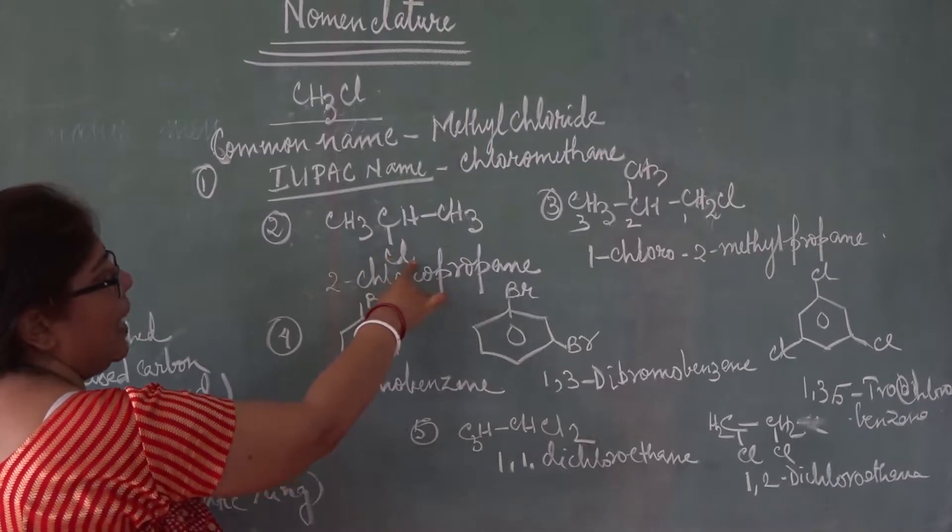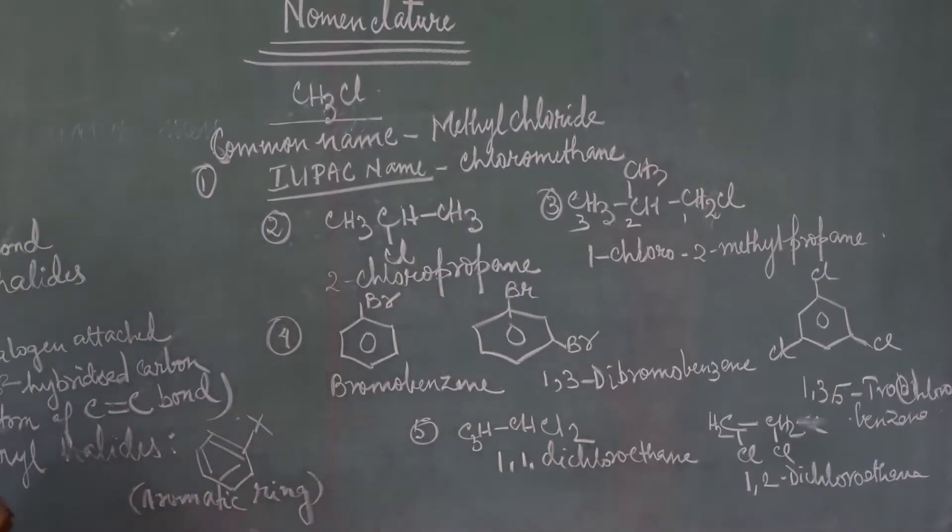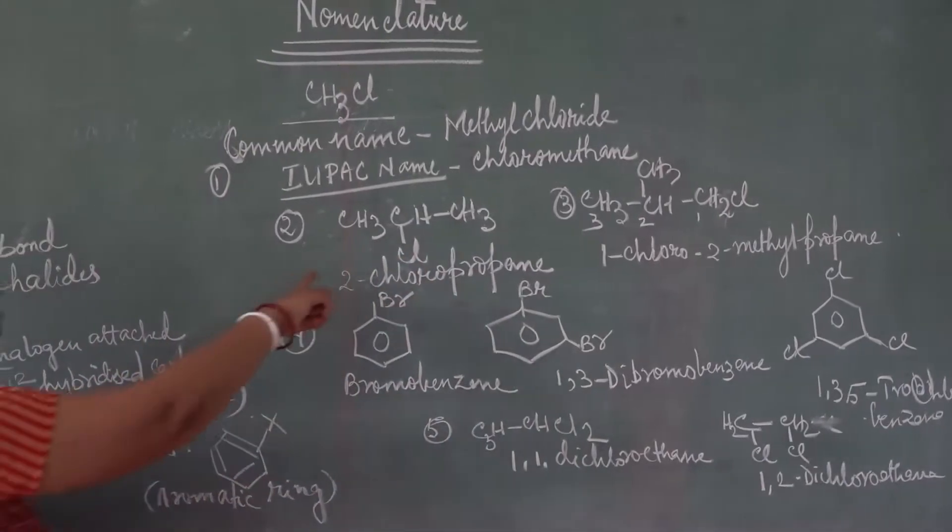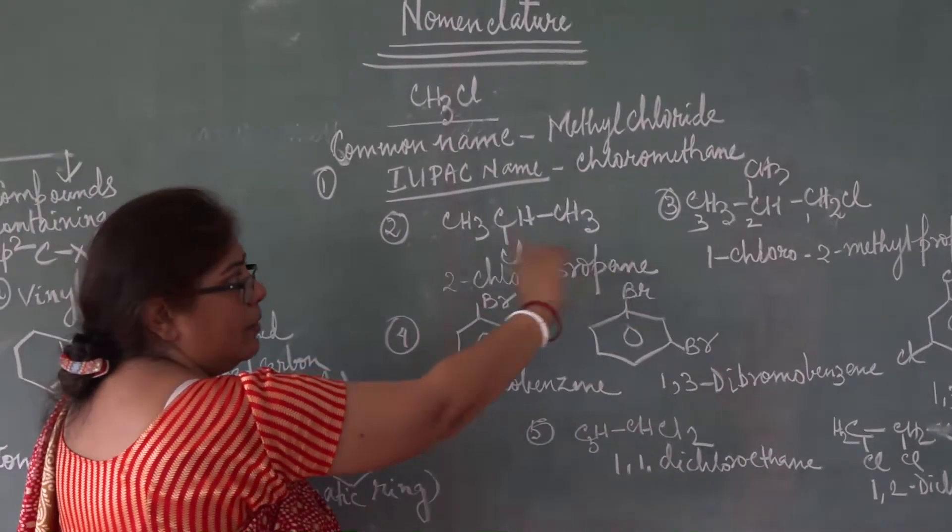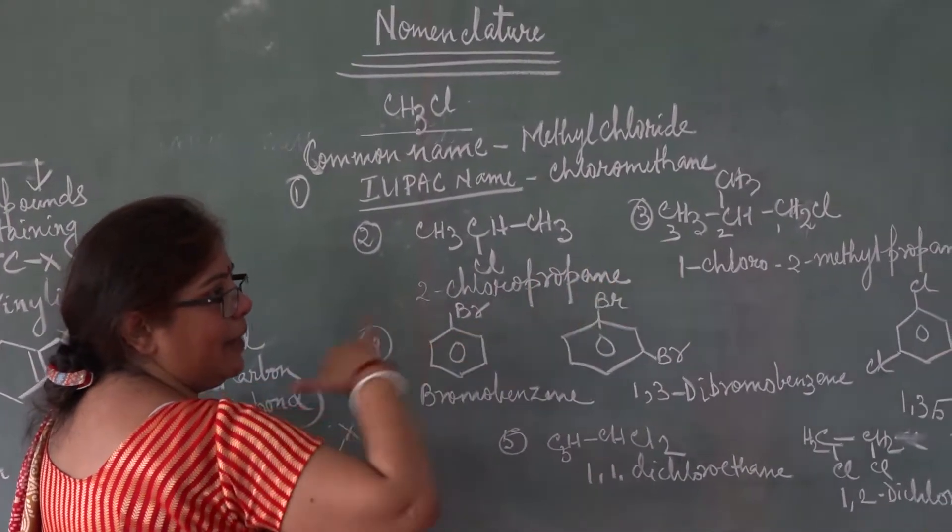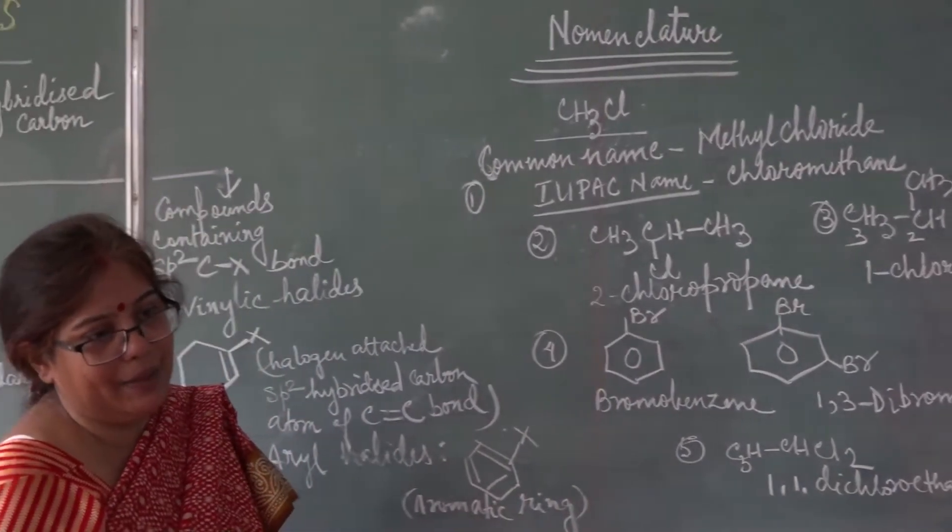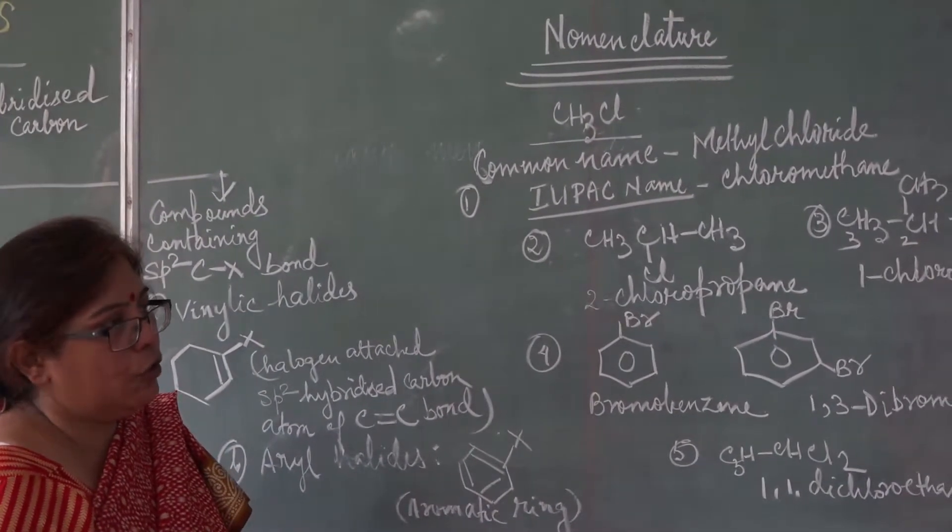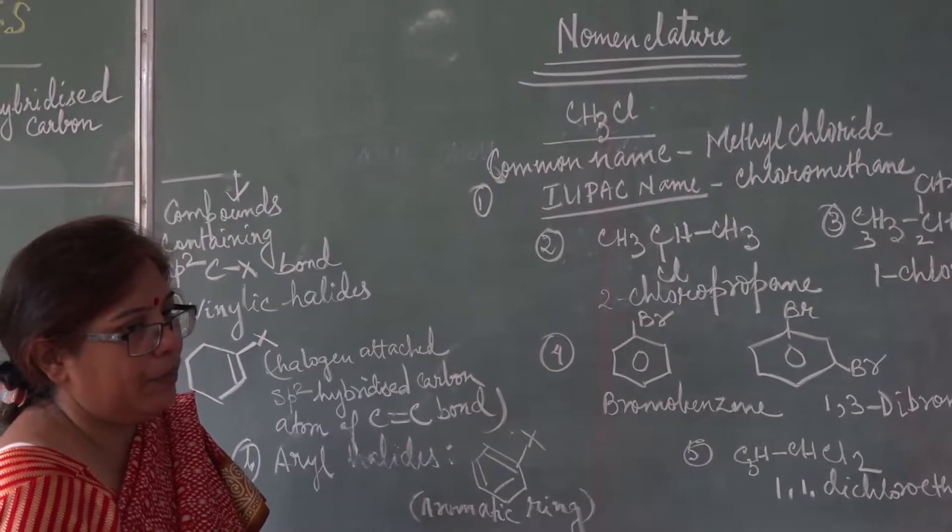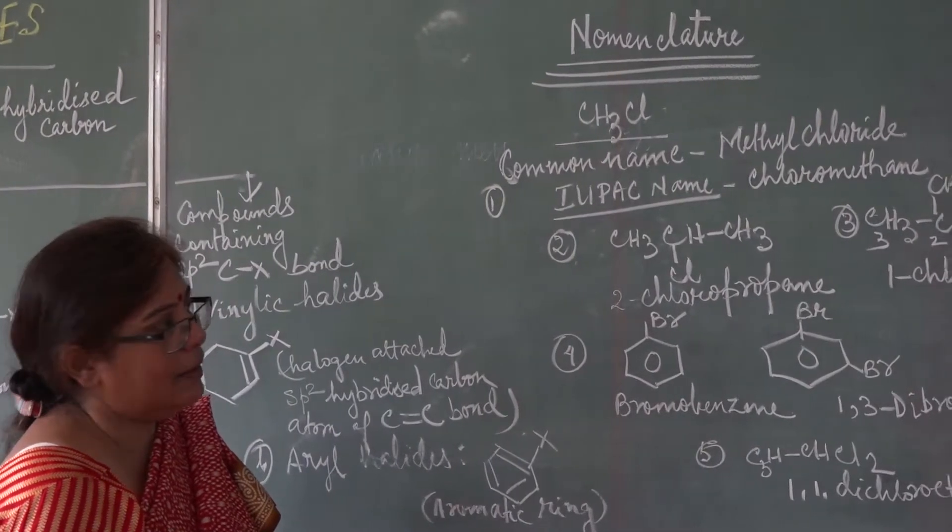Suppose here is Br. So what will be the name then? Two, bromopropane. Similarly, four carbon derivative has a straight chain and Br is attached to the second carbon. What will be the name? Two, bromobutane. Clear?